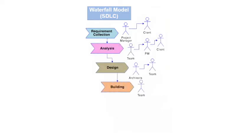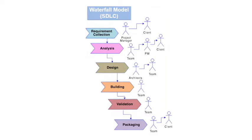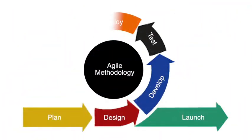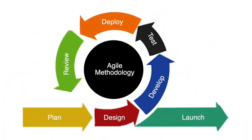It is a simple and straightforward model that is linear in its approach, going step by step through each task within the cycle. Next up, we have the Agile model, which is a more flexible and iterative model that emphasizes collaboration and customer satisfaction. This is one of the models that you use more frequently in your day-to-day life.